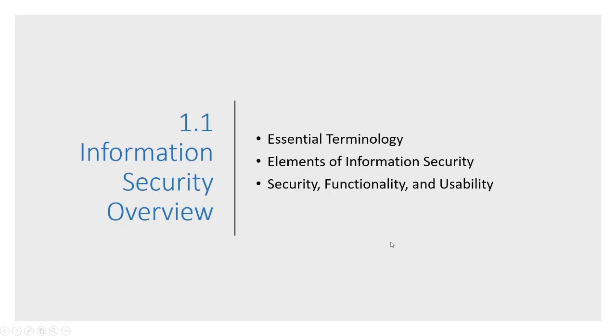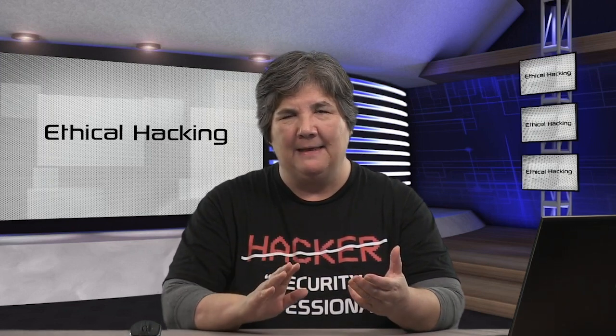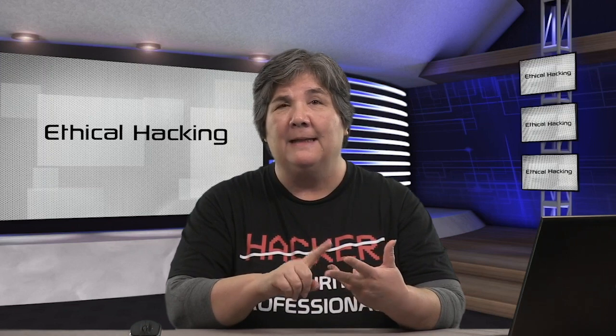Let's start with what is information security — some terminology, and the elements of security, functionality, and usability. Information security is about trying to maintain the confidentiality, integrity, and availability of your information made available through systems, networks, and applications. The CIA — confidentiality, integrity, availability — is the bedrock foundation of everything you do in information security.